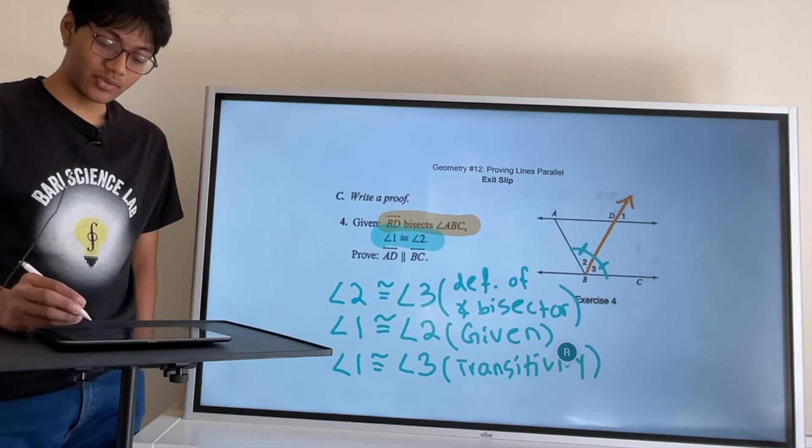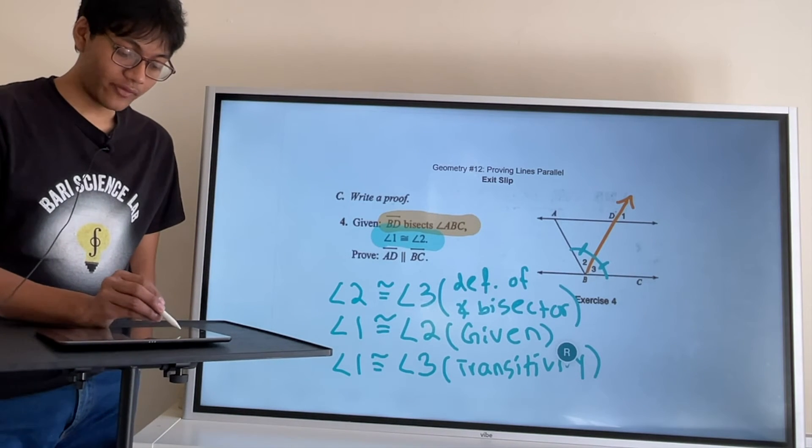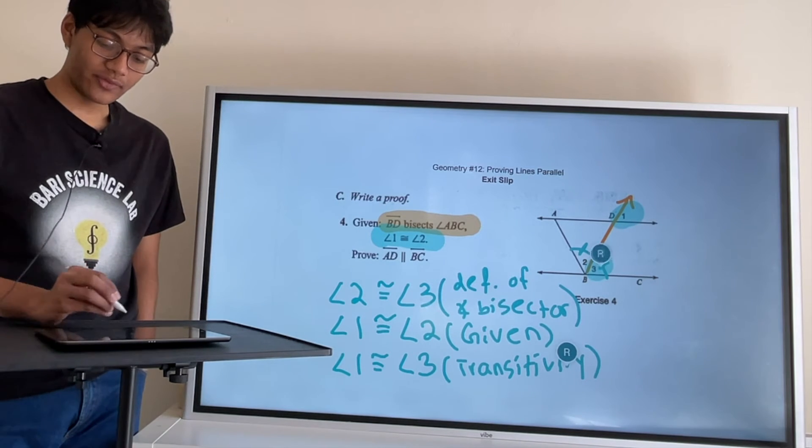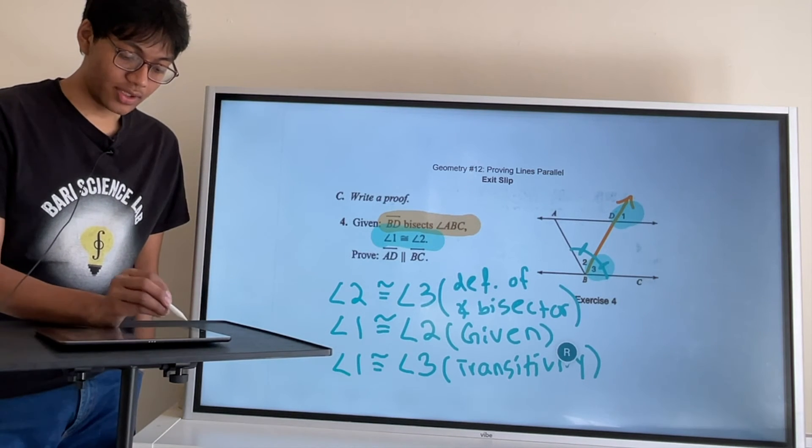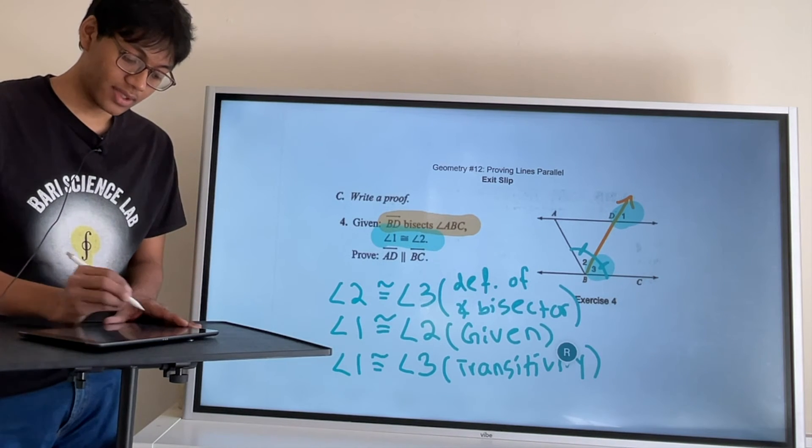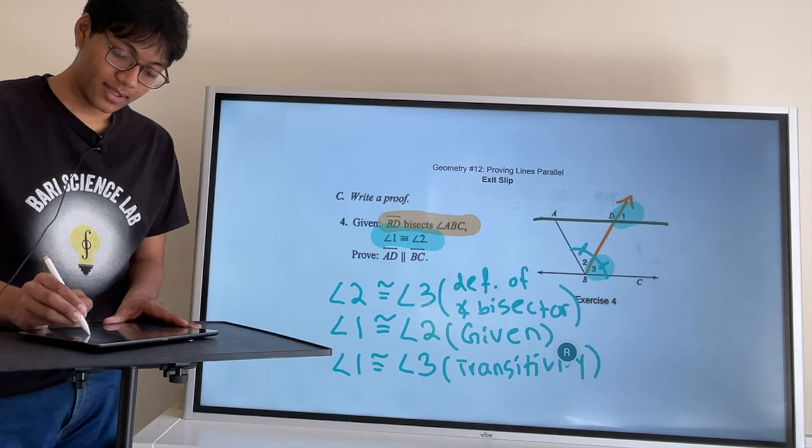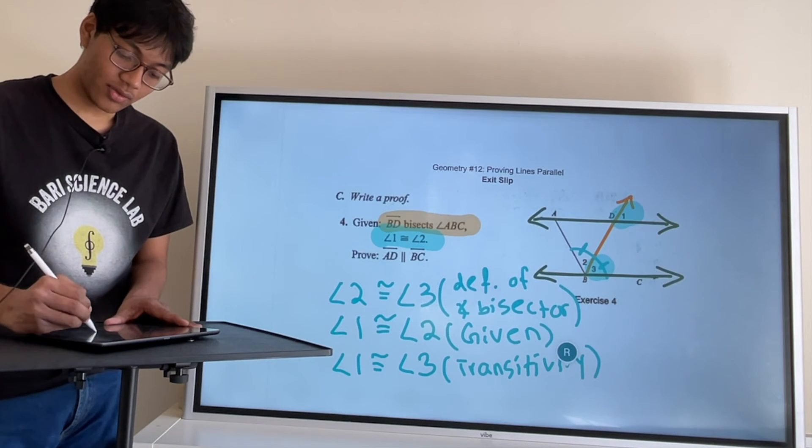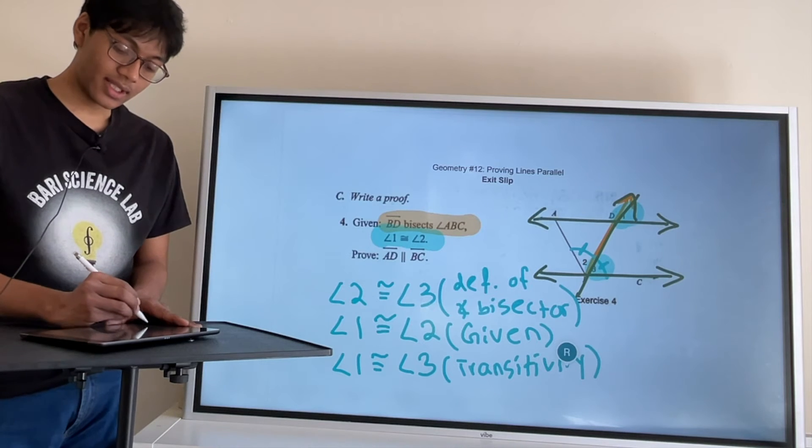So we know that 1 is congruent to 3 and now we can finish our business. Note how 1 is over here, 3 is over here. You can even imagine some parallel lines here. Let me draw them out for you so you don't have to imagine. Here's one parallel line. Here's the other one. This orange line here is the transversal that cuts them up.